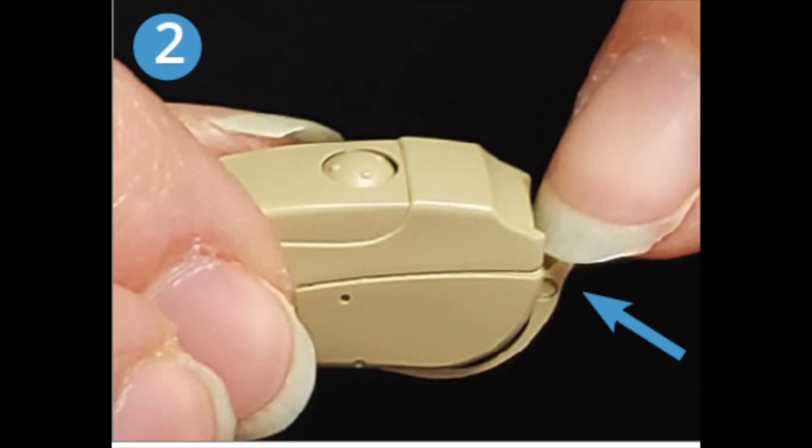Step 2: The Sona has a two-stage battery door. Press down on the battery door tab until the door opens slightly, as shown in the image.